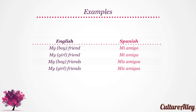For example, my boyfriend translates to mi amigo — try that. It is mi amigo. My girlfriend becomes mi amiga. While my boyfriends is mis amigos — try that. It is mis amigos. Lastly, my girlfriends is translated as mis amigas.